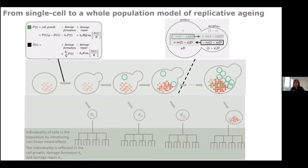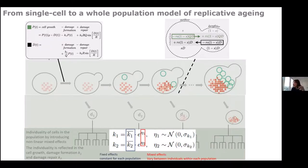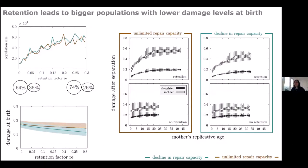Barbara introduced individuality in cell growth, damage formation, and damage repair: rather than fixed parameter values, she used normal distributions and drew from those. So on top of the ODE model, some parameters have probability functions rather than fixed values. Certain effects are kept constant while three effects vary between individuals. This whole platform then enabled much more interesting analyses.